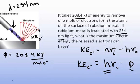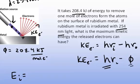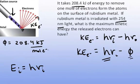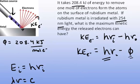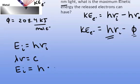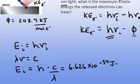The energy of the incident radiation is going to equal hν. We're given the information about the photons in terms of wavelength, so we need to recall that wavelength times frequency equals the speed of light. We can calculate the energy of the incident radiation as E = hc/λ. Planck's constant is 6.626 × 10⁻³⁴ joule·seconds.